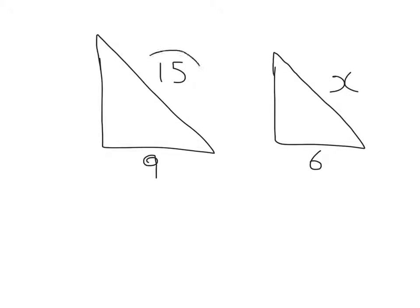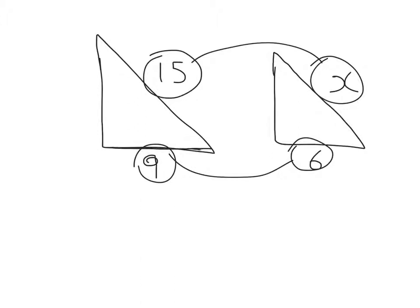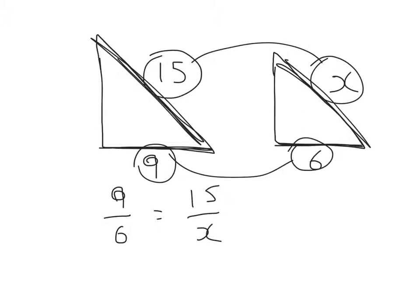Well, that side corresponds to that side, and that side corresponds to that side. The ratio in which that side is bigger to that side will be the same as the ratio in which that side is bigger to that side. So I can say that 9 to 6 as a ratio is equal to 15 to x as a ratio. I can then cross multiply. 9 times x is 9x equals 15 times 6 which is 90. x equals 90 over 9, and x is equal to 10.